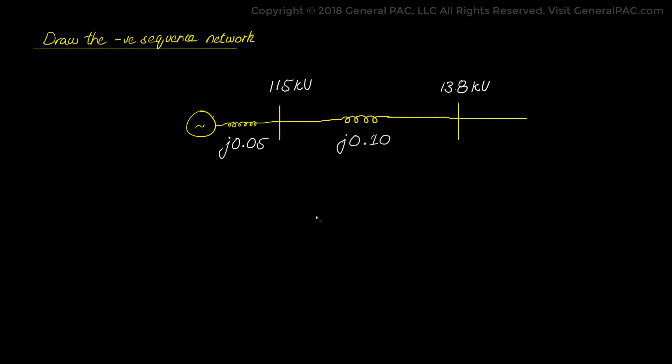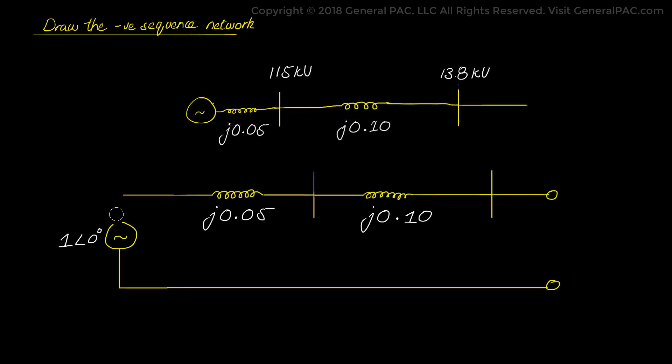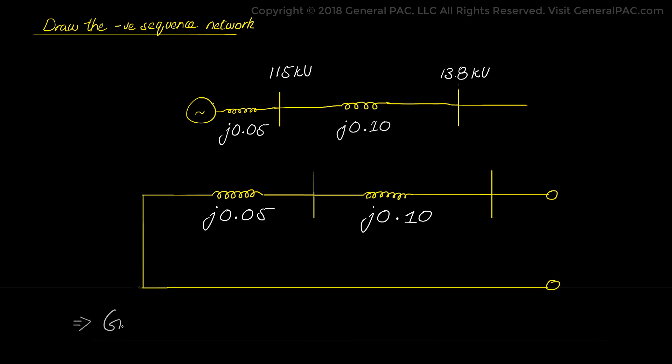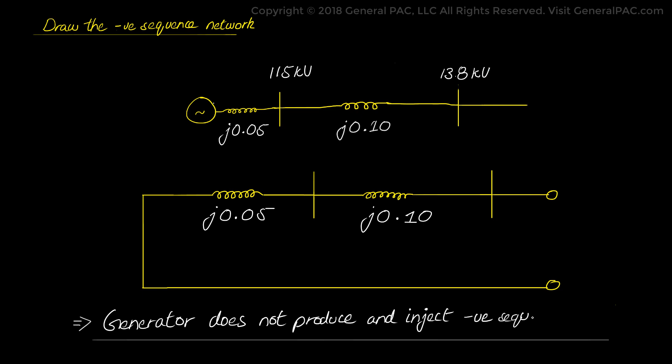Now let's draw the negative sequence network. For the negative sequence network, it's essentially the same as the positive sequence network, with the exception that there is no voltage source. This is because the generator does not produce negative sequence current, and therefore does not inject negative sequence current into the system during a faulted condition. But negative sequence current will still flow through the winding for a balanced and unbalanced fault, so we still represent j0.05 per unit, but we don't represent the actual voltage source of 1 per unit at 0 degrees. It is very similar to the positive sequence network diagram.